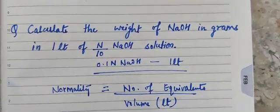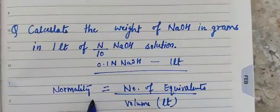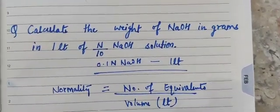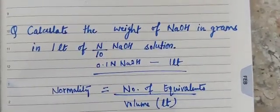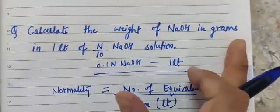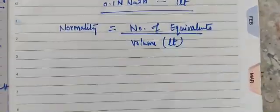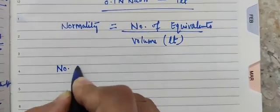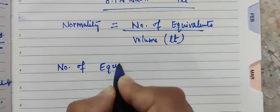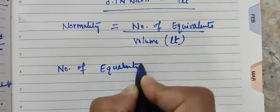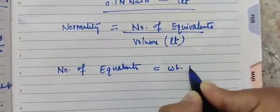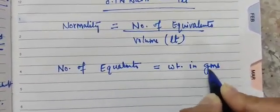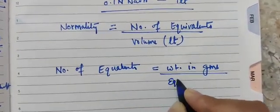Now we have been given the normality, we have been given the volume. What we have to calculate is weight of NaOH in grams. So to find out the weight in grams, we could use the formula of number of equivalents. And that is weight in grams divided by equivalent weight.